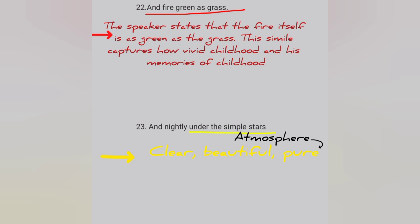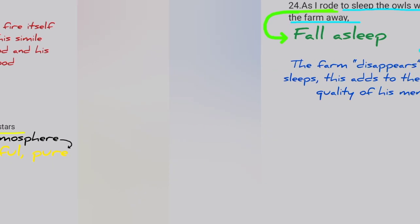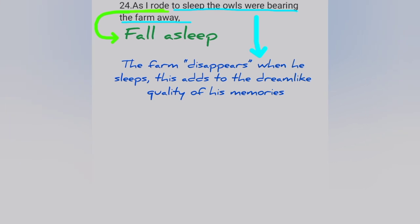Lines 22 and 23: 'fire green as grass' — the speaker states that the fire itself is as green as grass. This simile captures how vivid his childhood and memories of childhood were. Line 23: 'the nightly under the simple stars' — we get the atmosphere under the simple stars; the atmosphere is clear, beautiful and pure. Line 24: 'As I rode to sleep, the owls were bearing the farm away' — the farm disappears when he sleeps. This adds to the dreamlike quality of his memories.